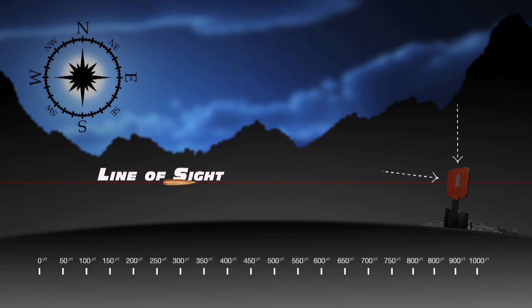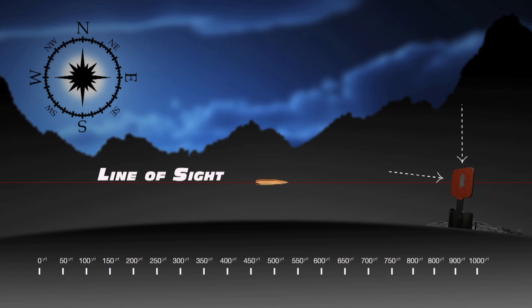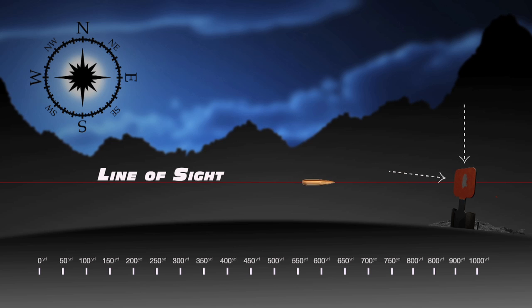The motion from the Earth's rotation can be split into two components: one that is in the direction of the bullet's flight, and one that is perpendicular to the bullet's flight in the vertical direction.